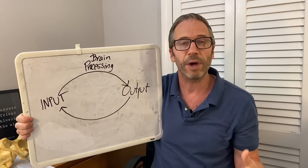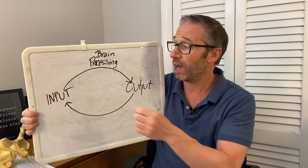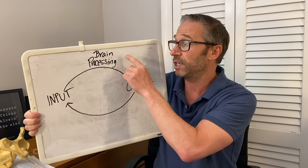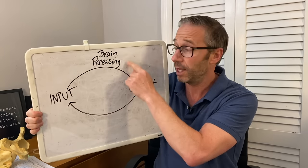If you have an overactive psoas or an overactive hip flexor on one or both sides, you have a faulty processing issue, which is based off of faulty input. The muscles don't tighten up by themselves.